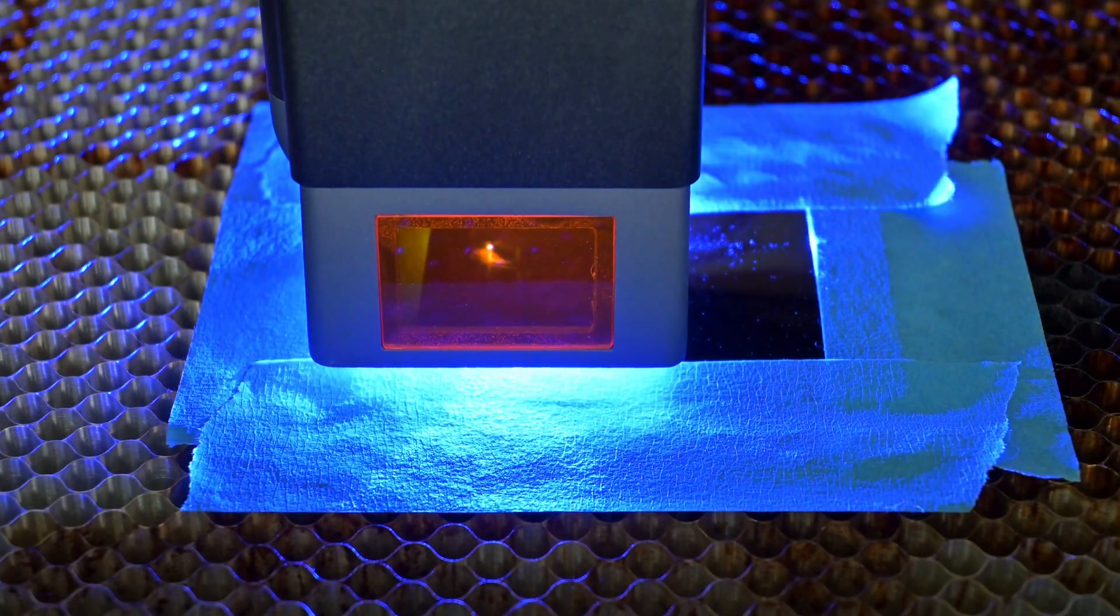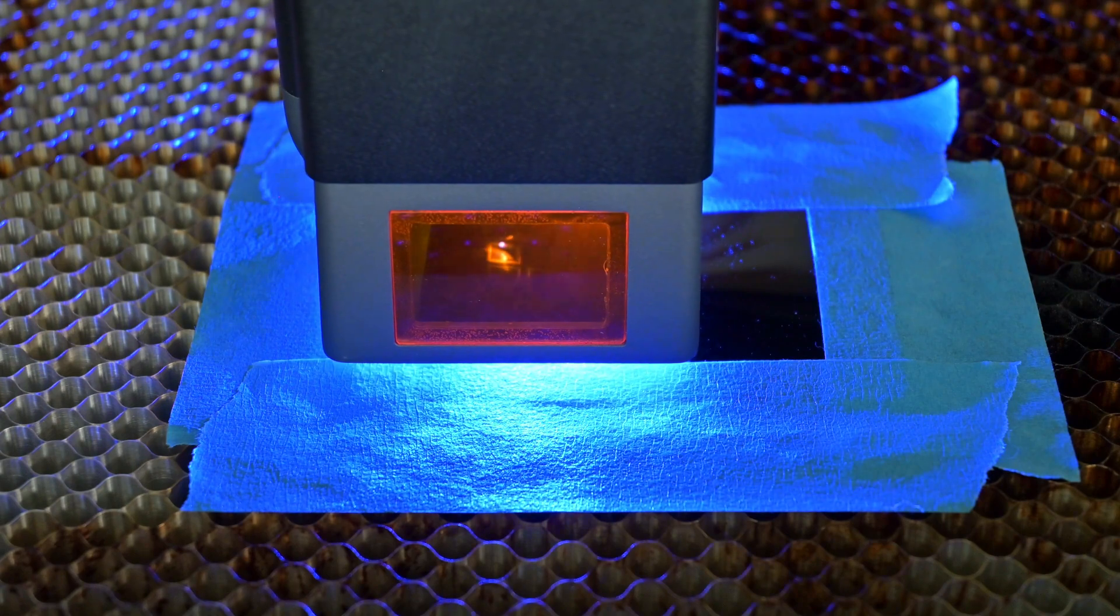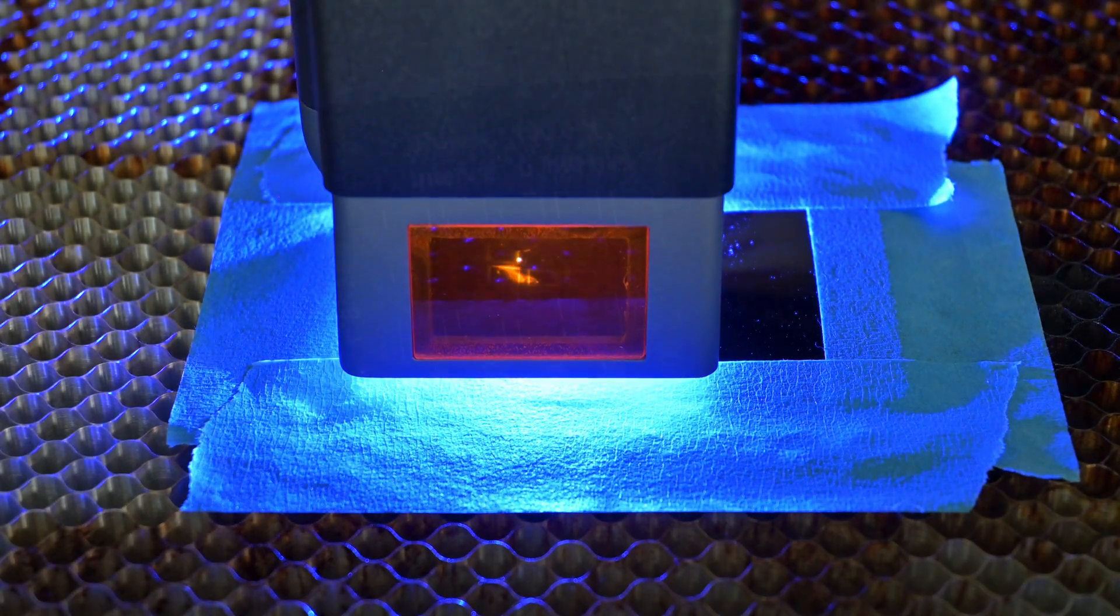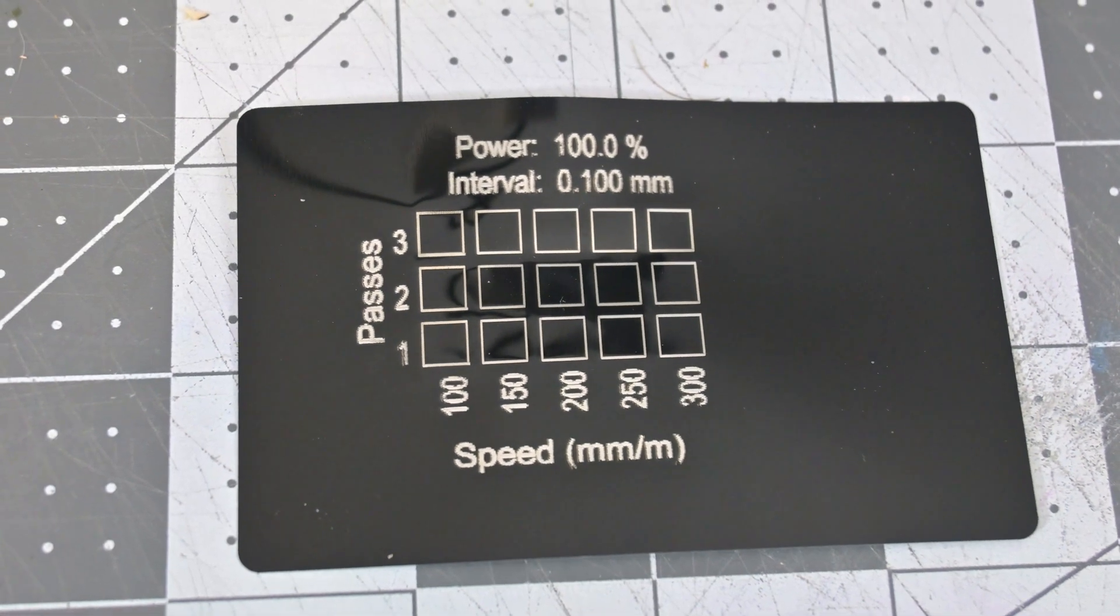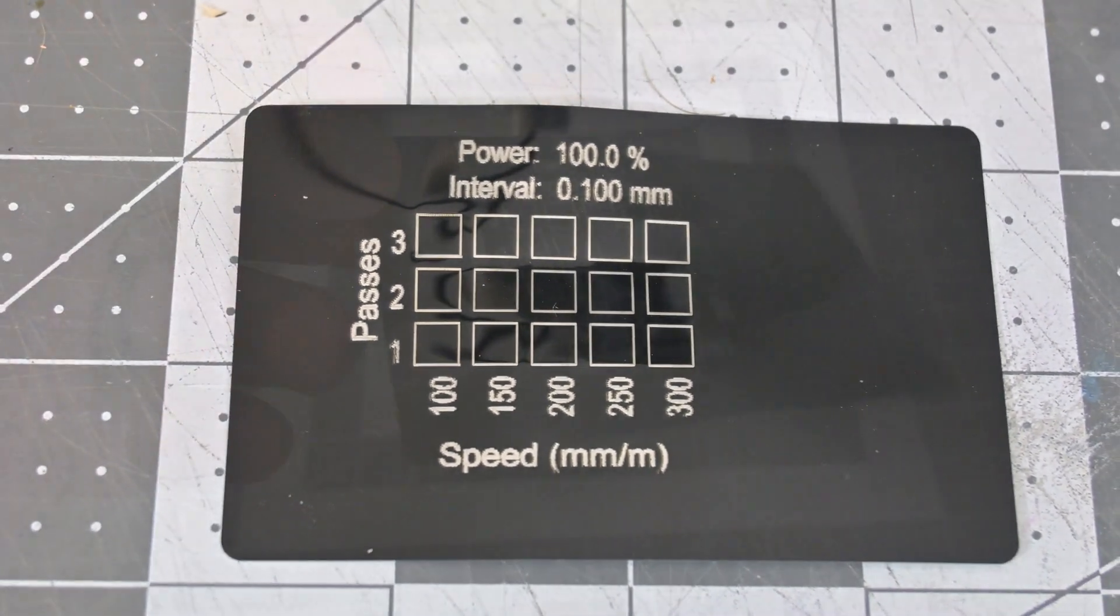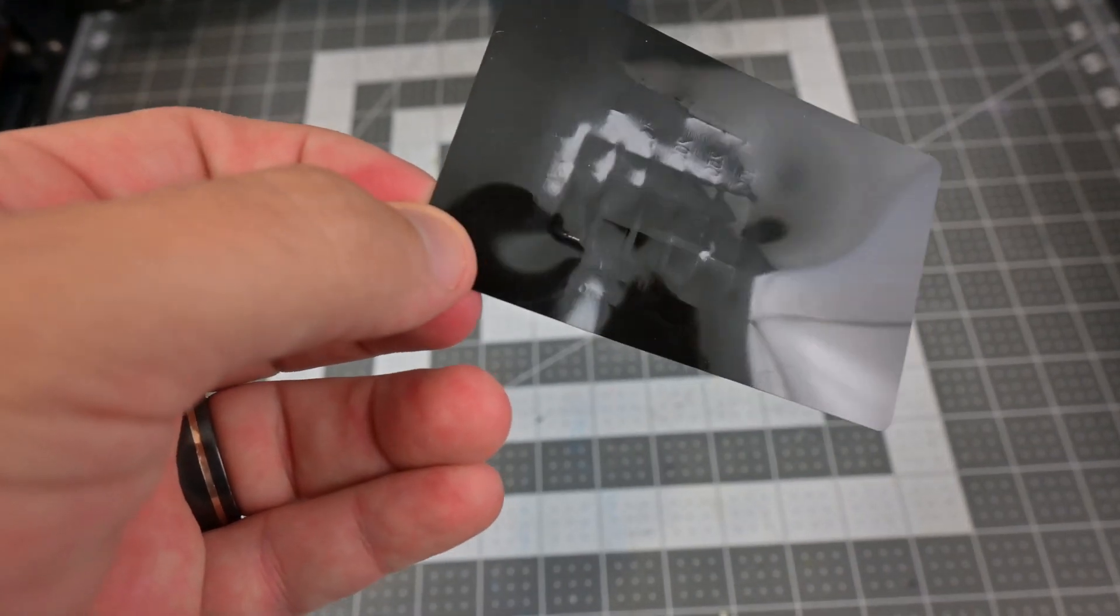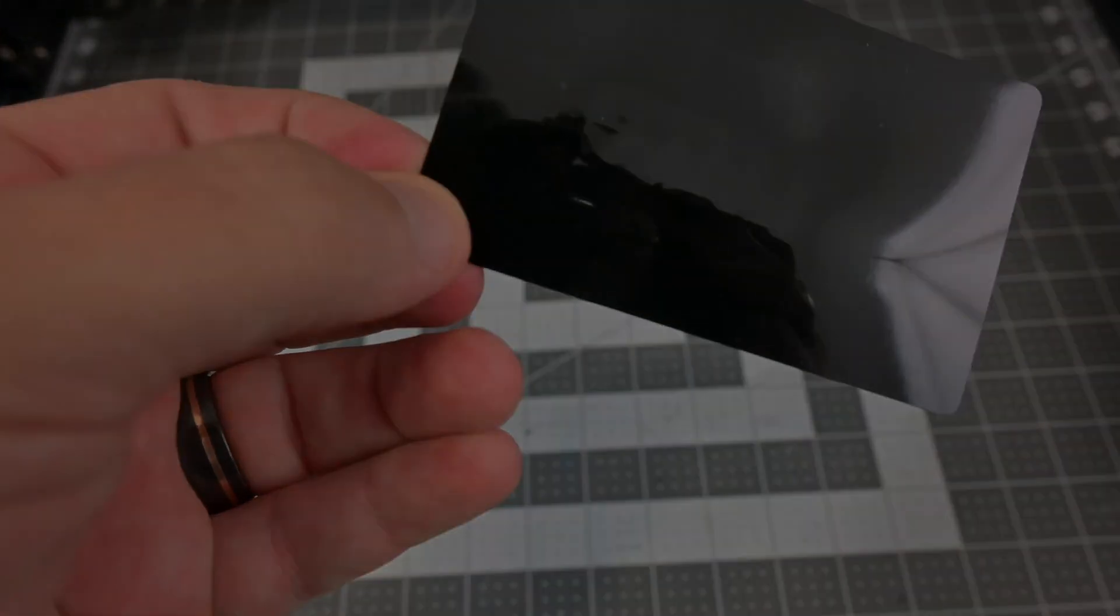WizMaker's website advertises one pass cutting of 0.1 millimeter metals with the 36 watt version. The thinnest metal that I had was this 0.18 millimeter aluminum business cards, but with my testing I could not get the WizMaker L1 to cut through. It might be able to cut other metals, but I wasn't able to verify that.